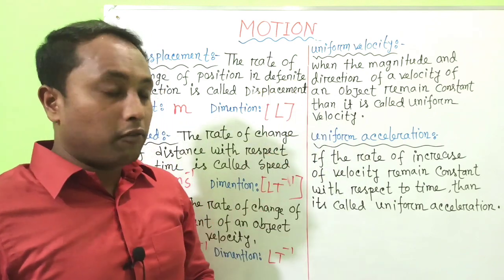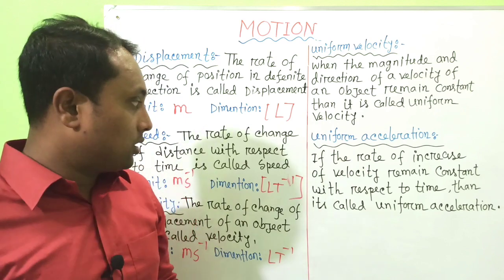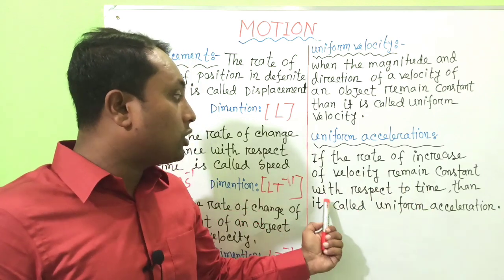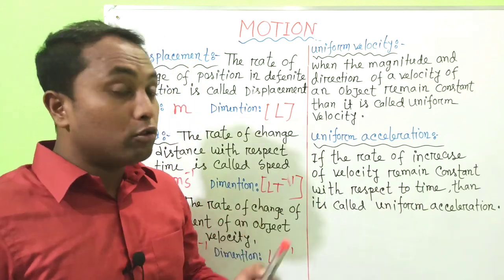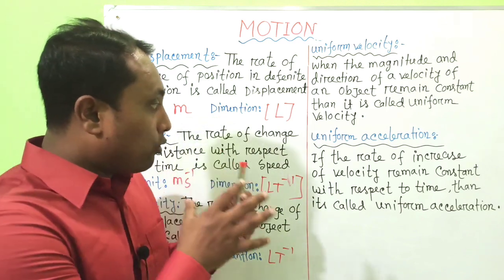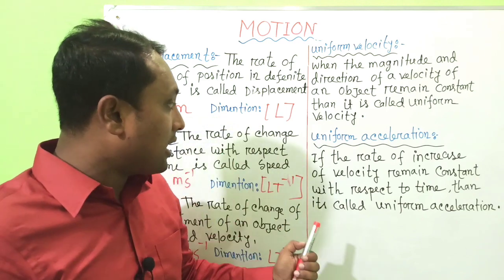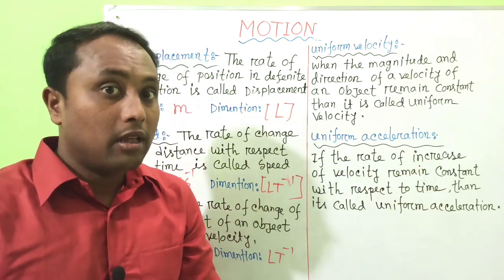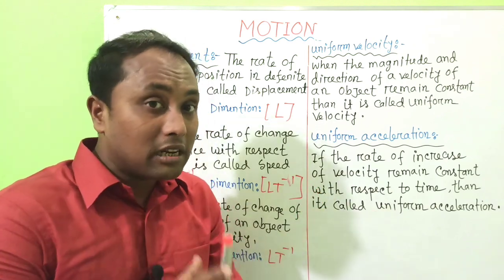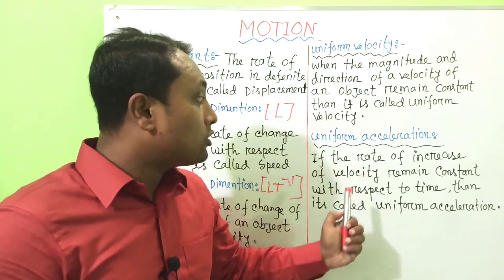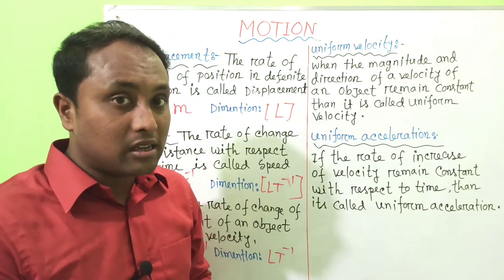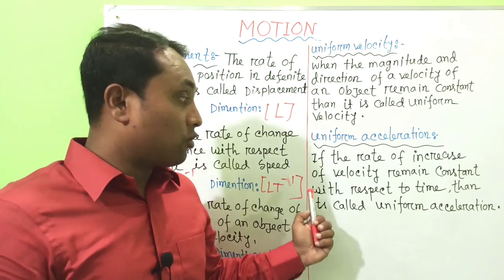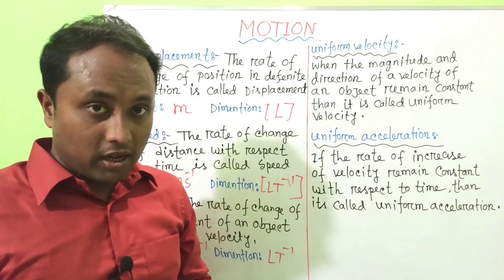The next definition is Uniform Acceleration. If the rate of increase of velocity remains constant with respect to time, it is called uniform acceleration. That means when time increases, the increase in velocity remains constant — it does not change with respect to time.